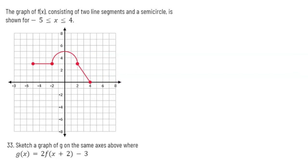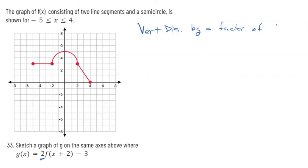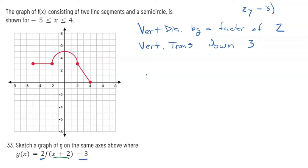In this graph we have the exact same function, but this time we're doing different transformations. Let's talk about what's happening vertically first. We see our a value is two — that's gonna be a vertical dilation by a factor of two. Then because of the minus three on the outside, that's a vertical translation down three. So all of my y coordinates are gonna get multiplied by two and then subtract three. Now for my x coordinates: there's a plus two inside, so that's a horizontal translation left two. So to all of my x values I subtract two, and to all of my y values I multiply by two and subtract three.